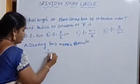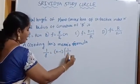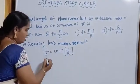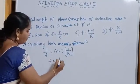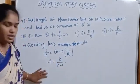1 by f is equal to n minus 1 into 1 by r for a plano convex. Then here we want f, then f is equal to r by n minus 1. This is the answer.